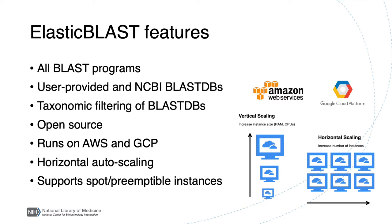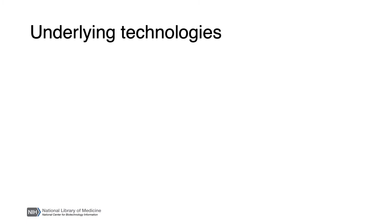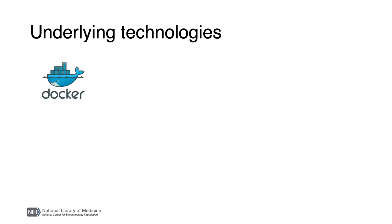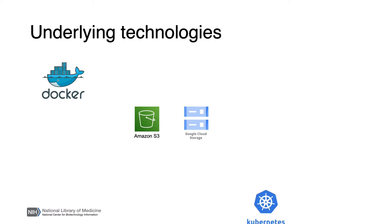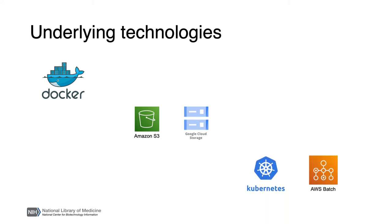Elastic Blast is implemented using Docker. It uses object storage, such as AWS S3 or Google's GCS, for BLAST databases, queries, results, and intermediary data, and Kubernetes in GCP and AWS Batch for cloud resource management and job orchestration.